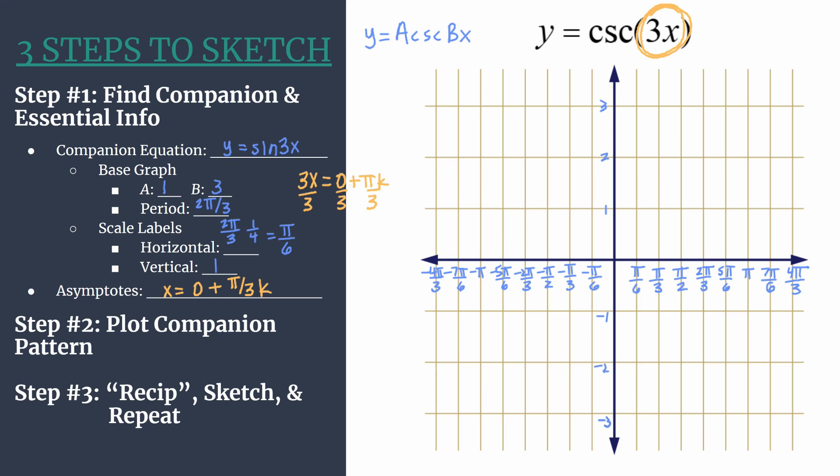You can let k equal 1, there should be one at pi over 3. If k is negative 1, there should also be one at negative pi over 3. This is a really nice way to generate every single asymptote without having to list anything out.